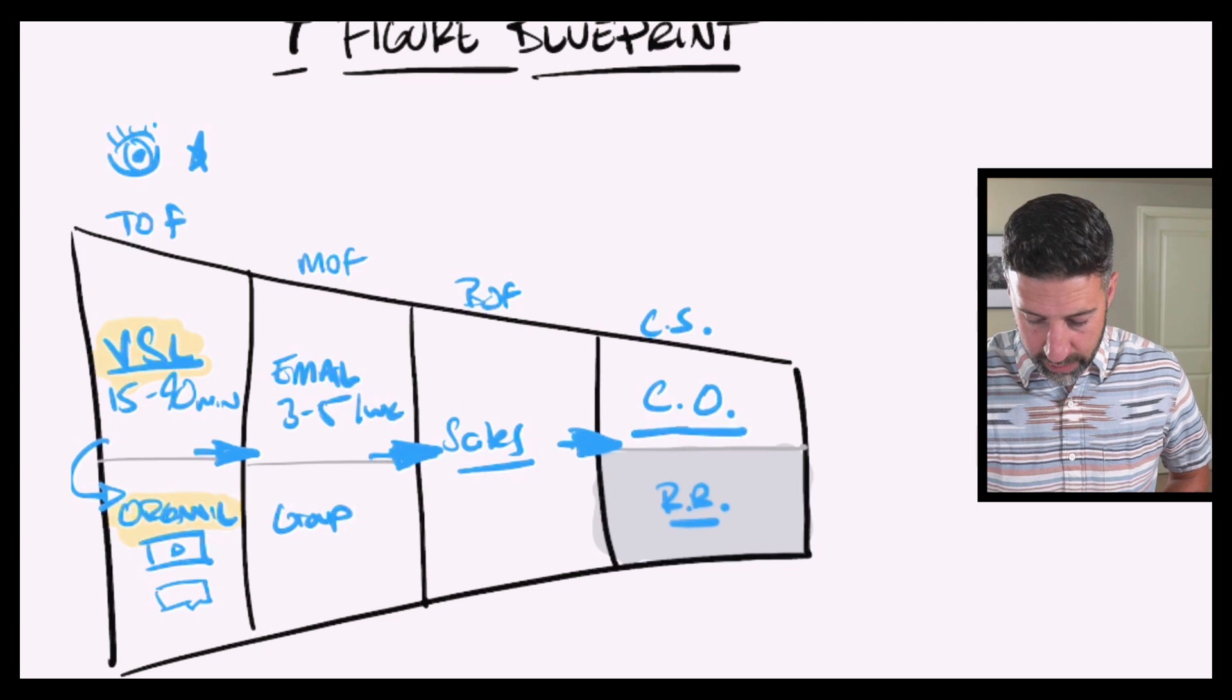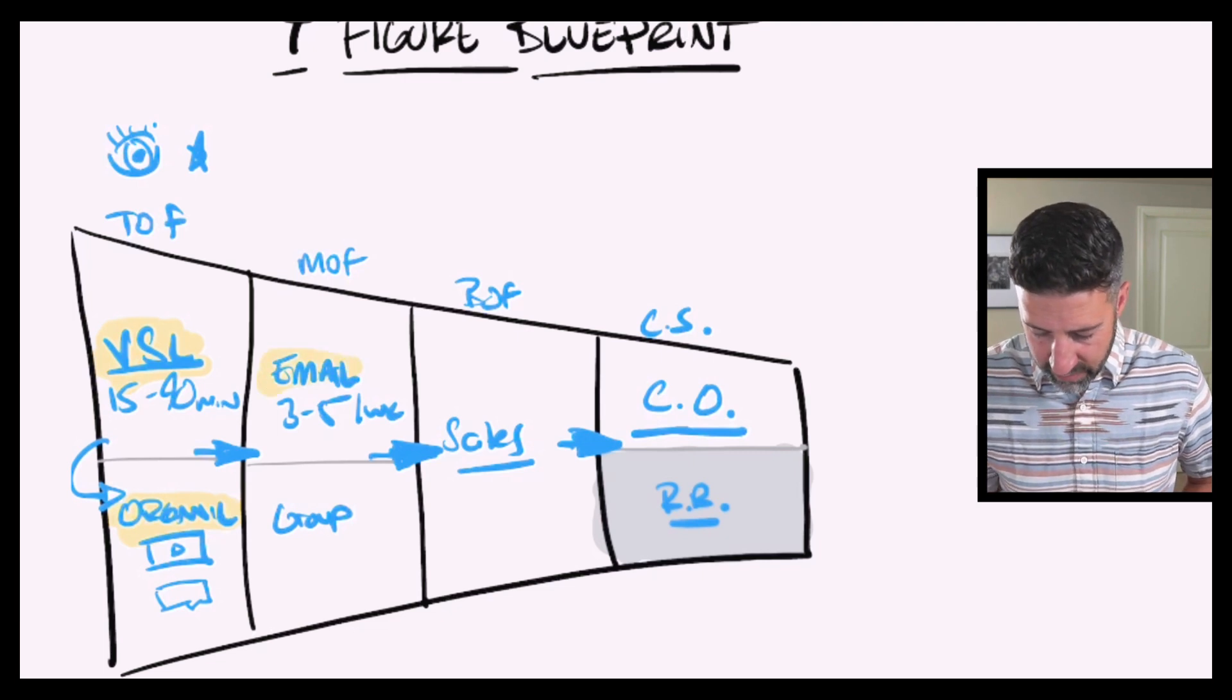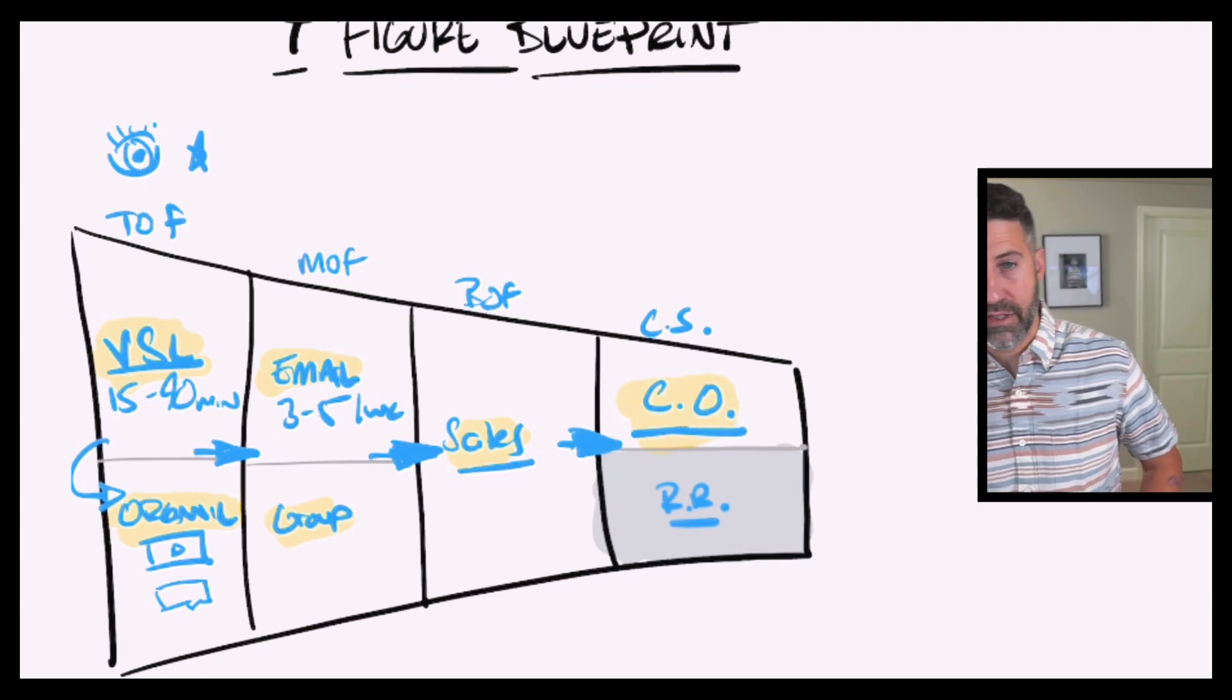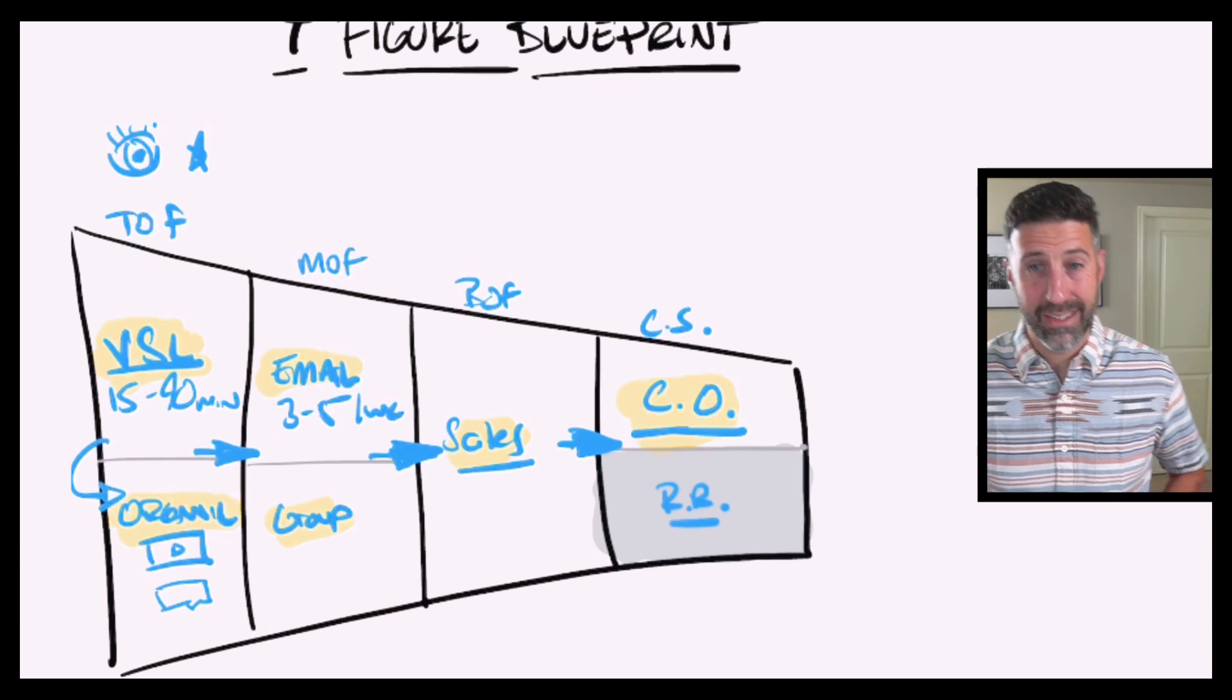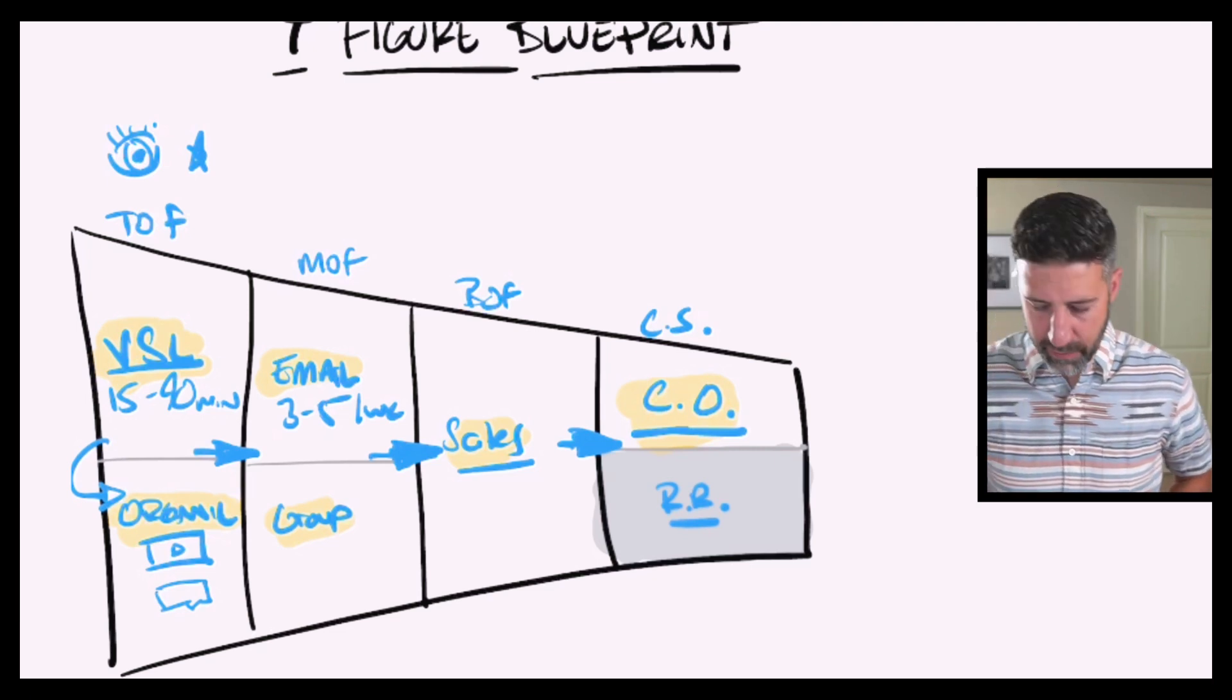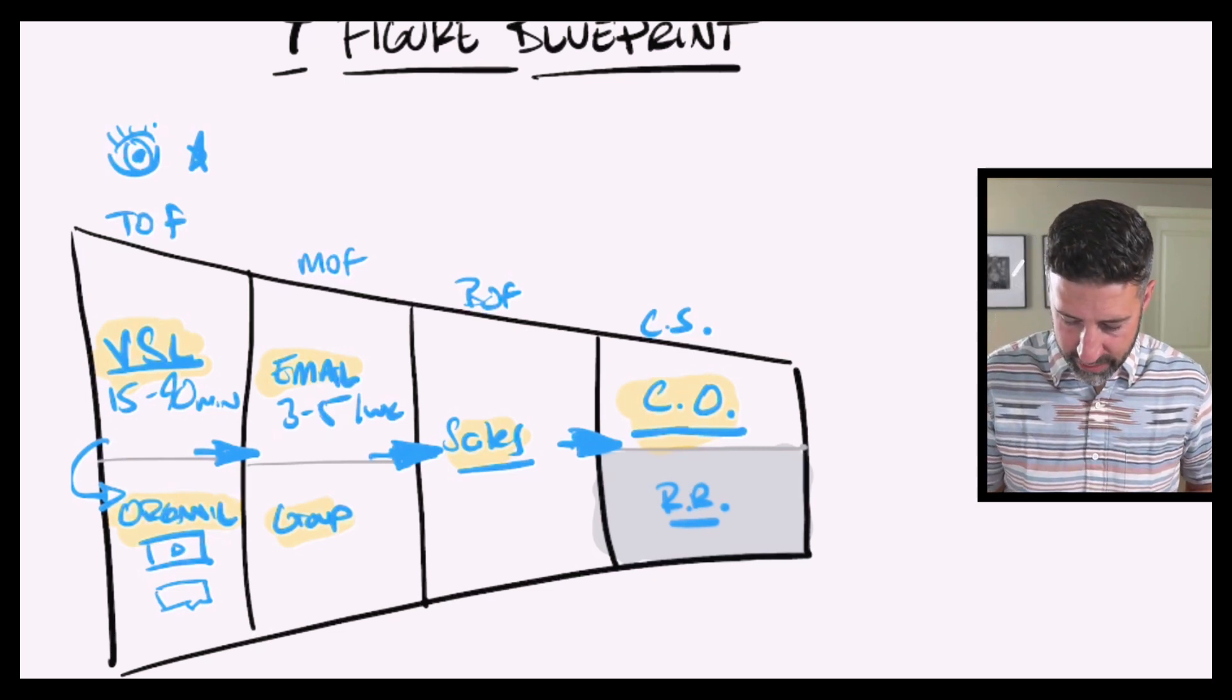So as we are going, you can roll each of these things out one at a time. Obviously, you want to know what your core offer is first. But if I look at this, one, two, three, four, five, six engines so to speak, that we need to create and define.